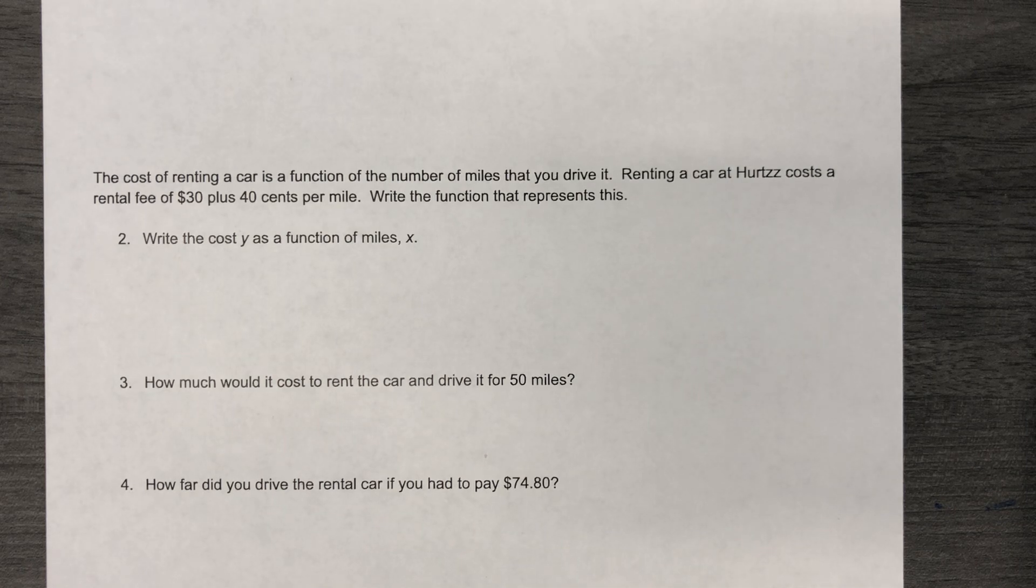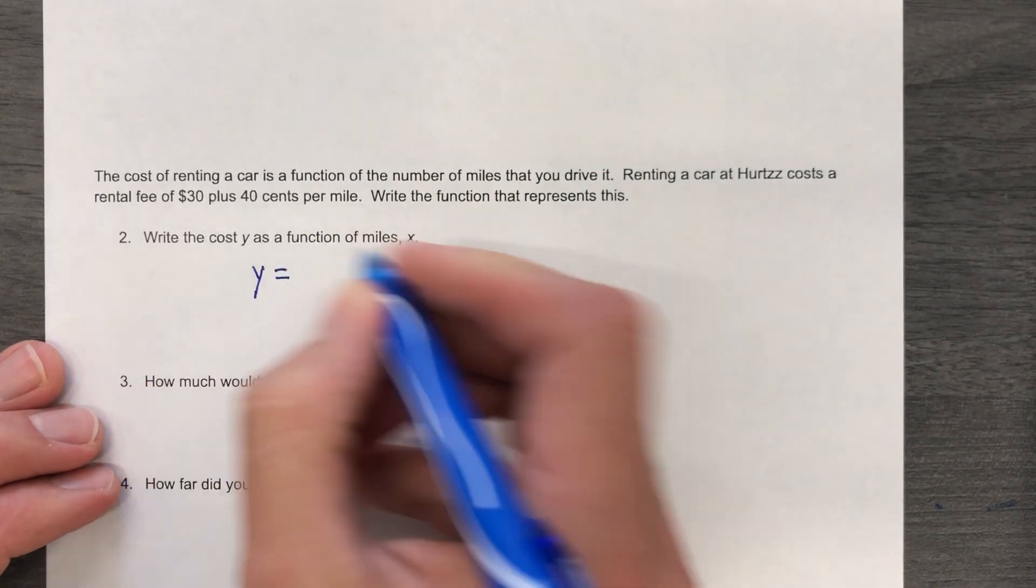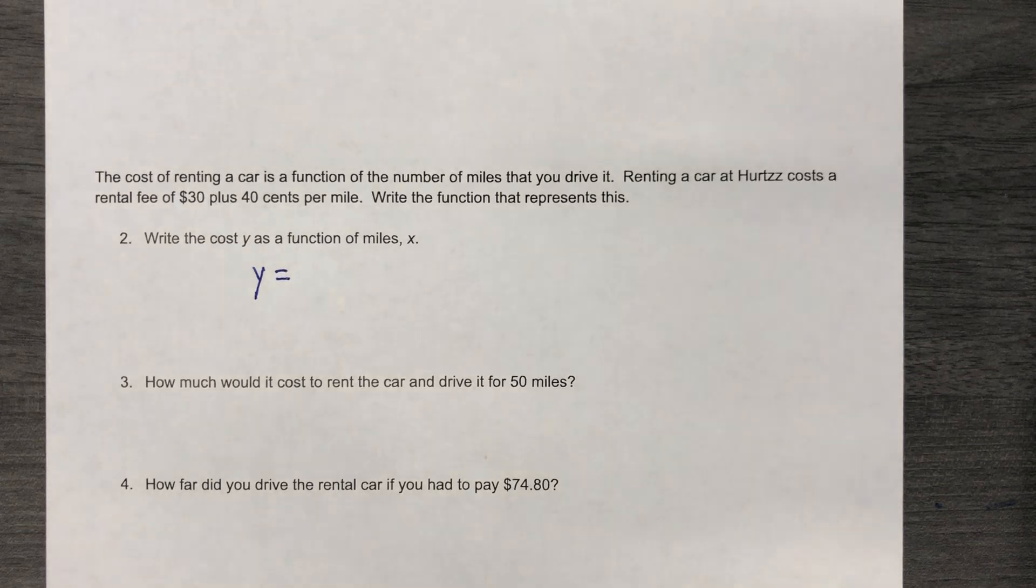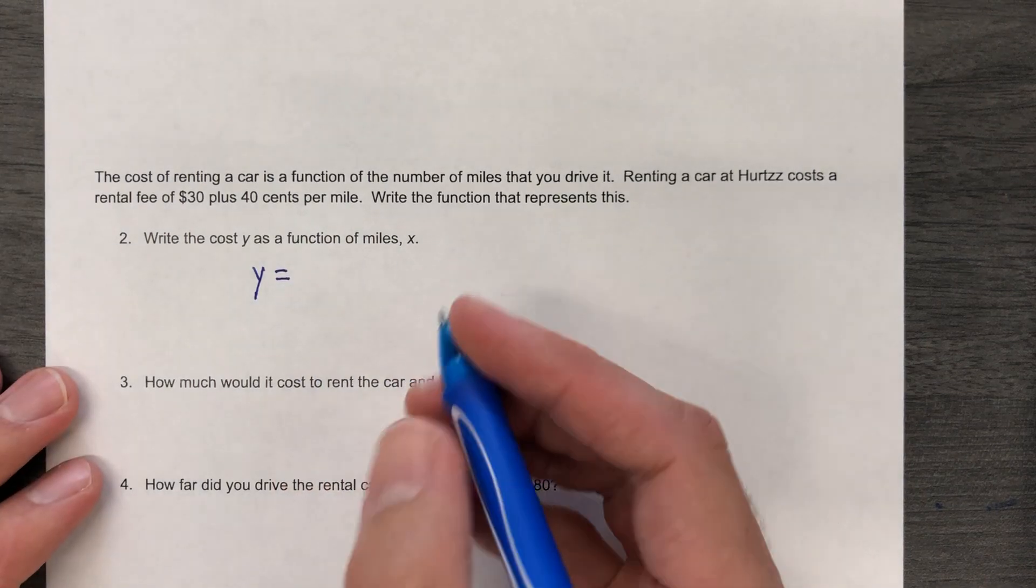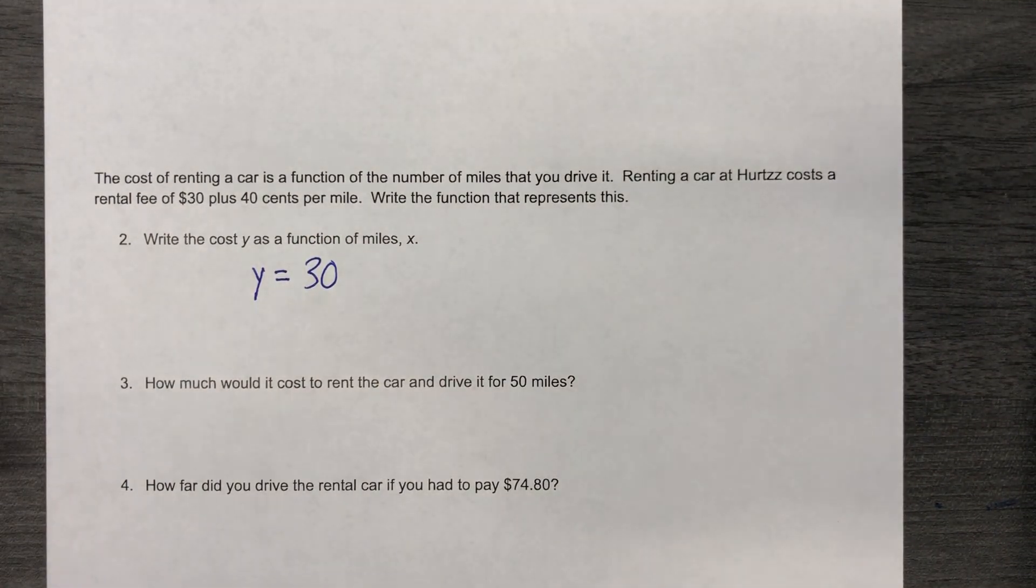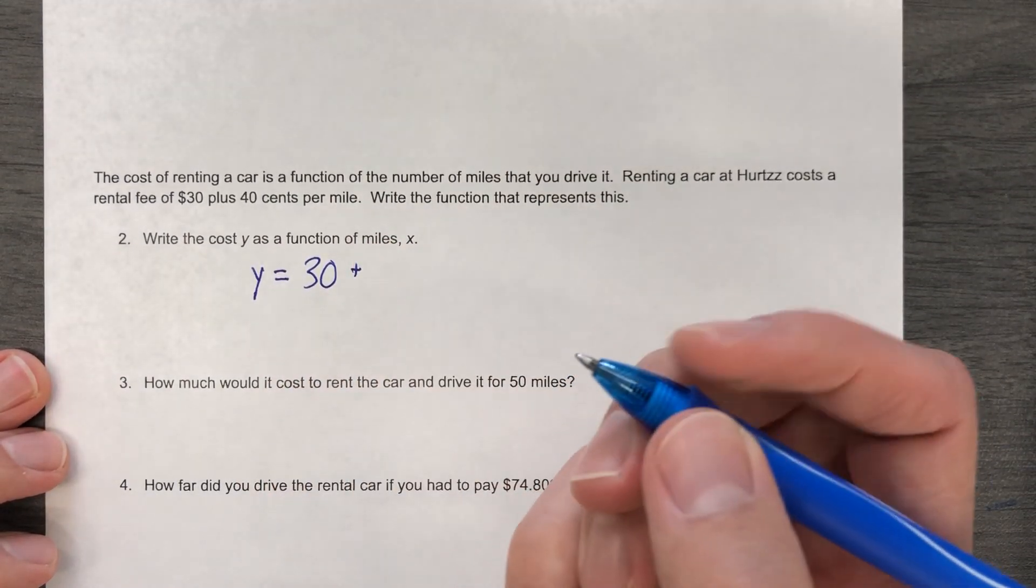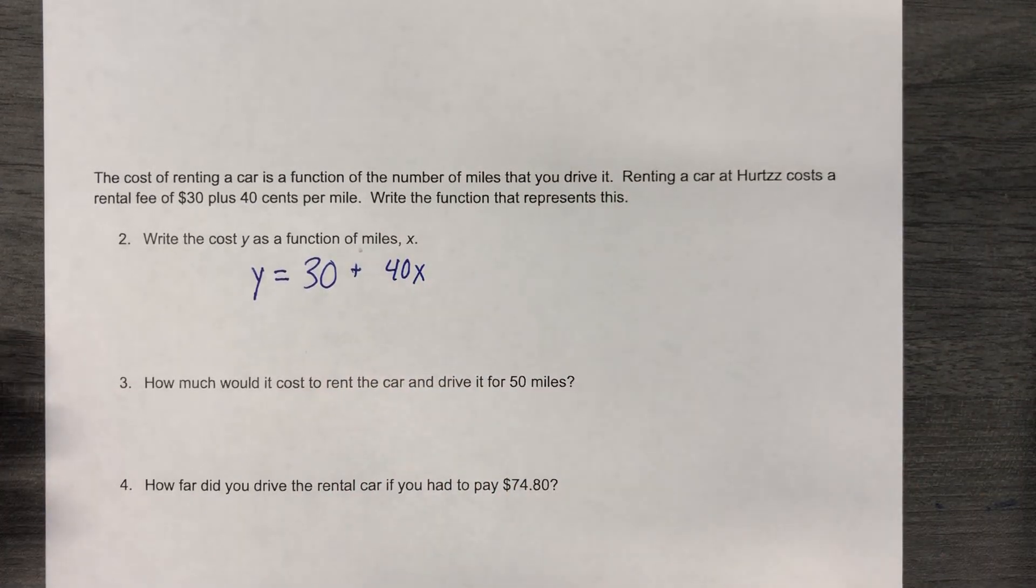So let's do that in blue. Write the cost Y as a function of the number of miles X. So we're going to do something to X to get Y. We're going to do something to the number of miles to figure out how much it would cost. And they told us what we needed to know. So I'm going to pay $30. I'm just going to pay $30, it's going to happen. I could rent the car and not drive anywhere, and I pay $30. But then I also pay $0.40 per mile.